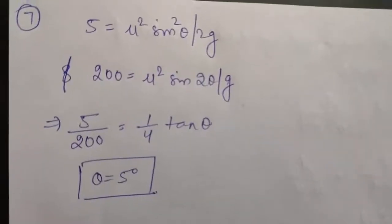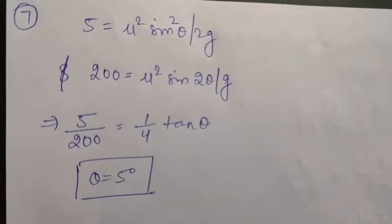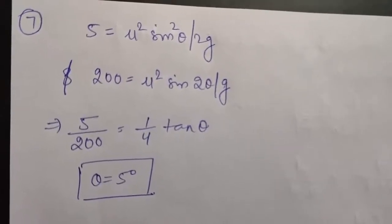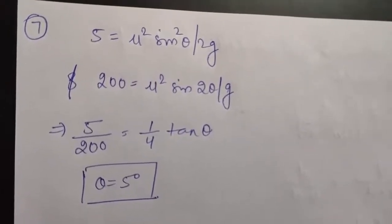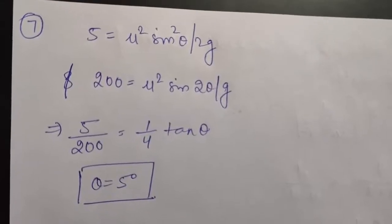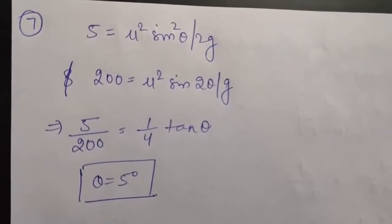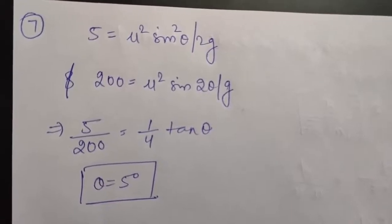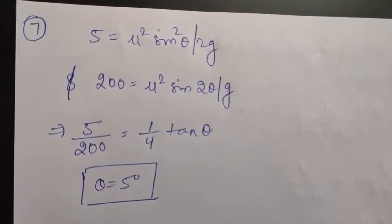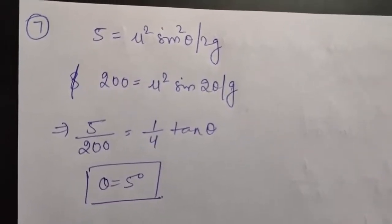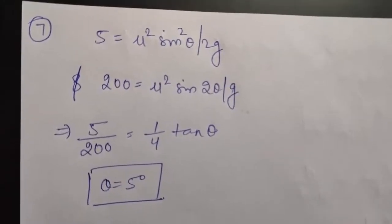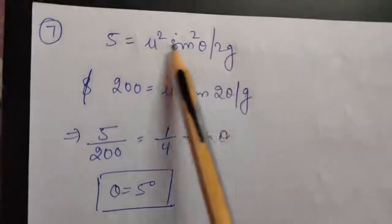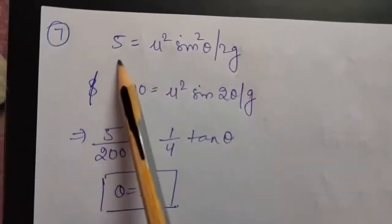In question number 7, a bullet fired from a rifle attains a maximum height of 5 metres and crosses a range of 200 metres. Calculate the angle of projection. Maximum height is given as 5, so we use the formula: H = u² sin²θ / 2g, and according to the question this equals 5.